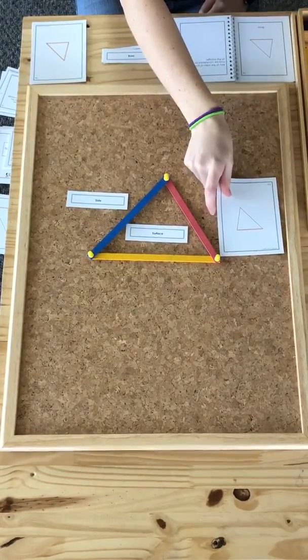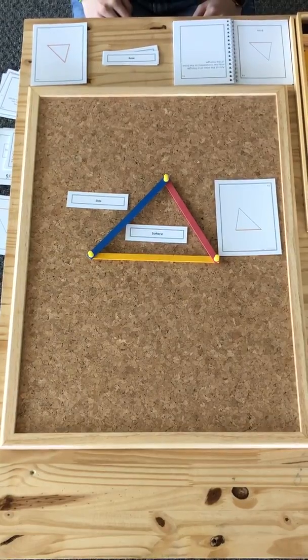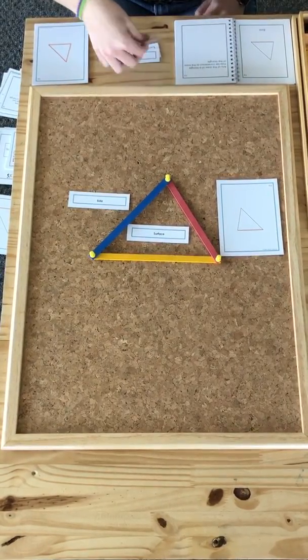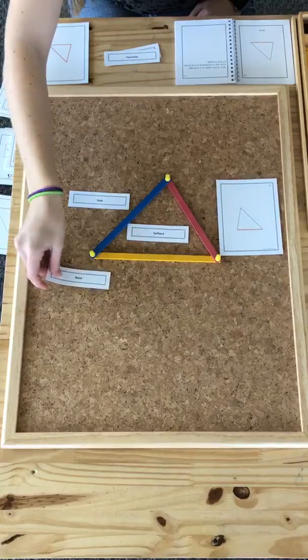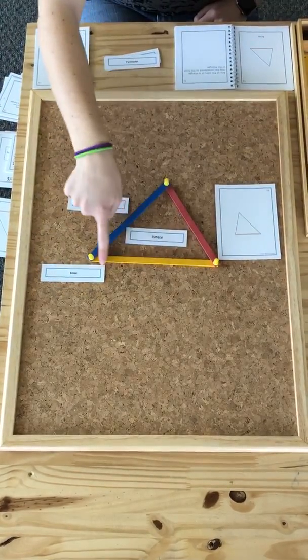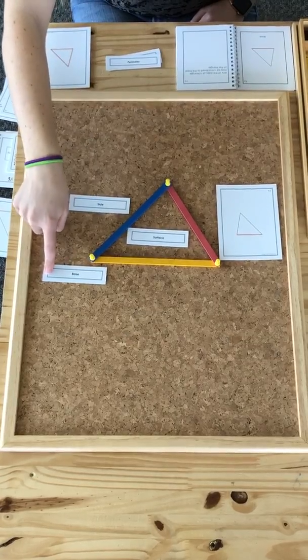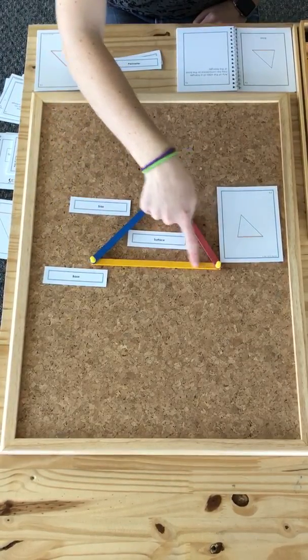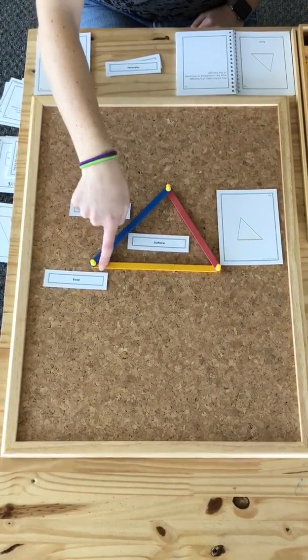Now any side of a triangle may be considered the base of a triangle, but for our purposes we'll consider this the base of our triangle. So it could be any side. We'll say that this one is our base.